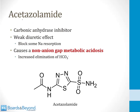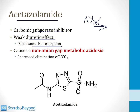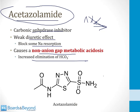In the renal video on diuretics, I talk about acetazolamide. It's a carbonic anhydrase inhibitor that has a weak diuretic effect because it blocks sodium reabsorption. The way acetazolamide works is by essentially causing a proximal RTA. Sodium gets reabsorbed along with bicarbonate in the proximal tubule, so when you shut down the reabsorption of bicarbonate, you shut down the reabsorption of sodium. This leads to a mild diuretic effect and causes a non-anion gap metabolic acidosis through increased elimination of bicarbonate. A patient taking acetazolamide will develop the same clinical features as a patient with a proximal RTA.